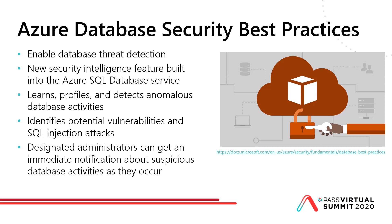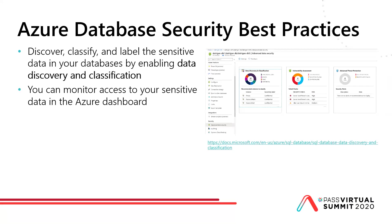Examples of behavioral anomalies include a spike of failed logins or queries, a high volume of data being extracted, or unfamiliar IP addresses used to access the database. Another best practice: you can discover, classify, and label sensitive data in your databases by enabling data discovery and classification. You can monitor access to your sensitive data in the Azure portal dashboard, and if Azure doesn't detect things automatically, you can add classification labels yourself.